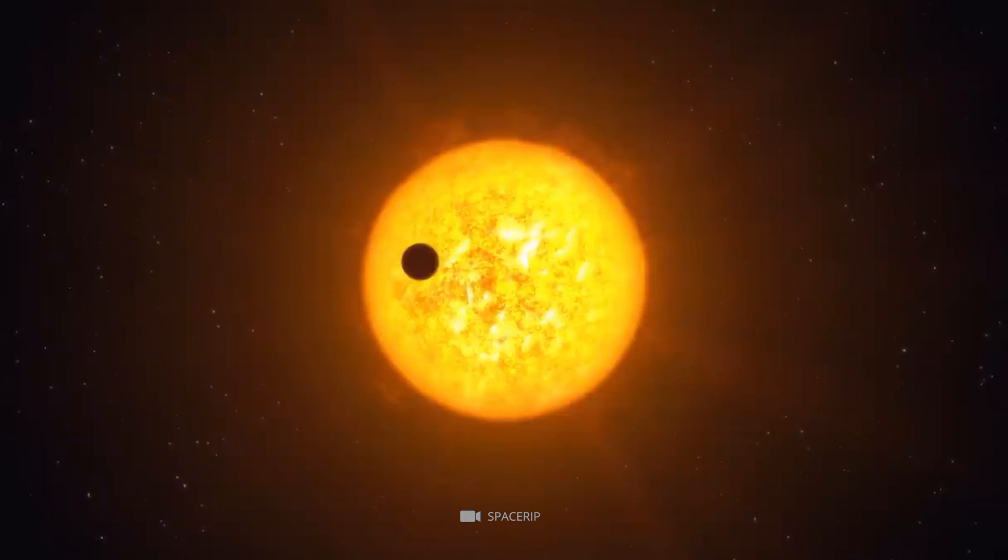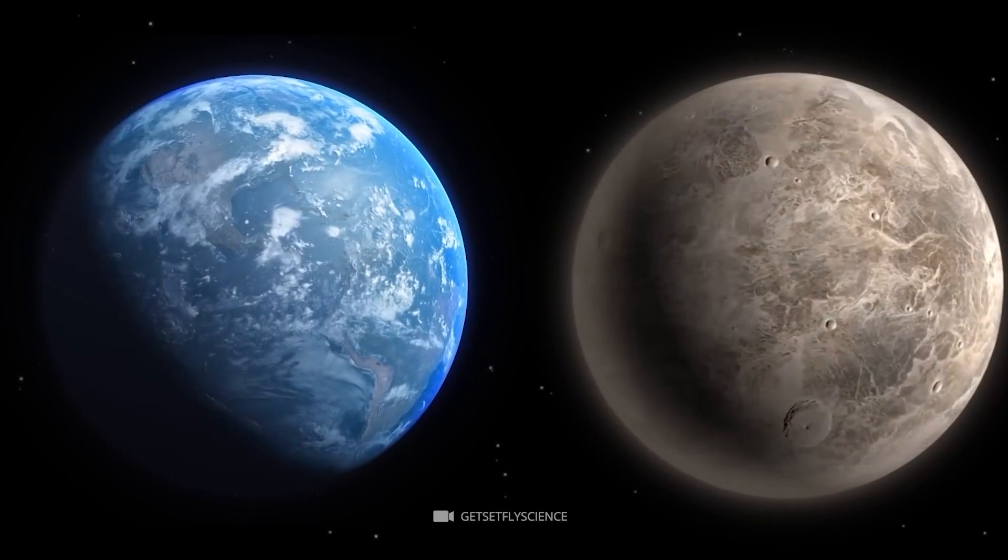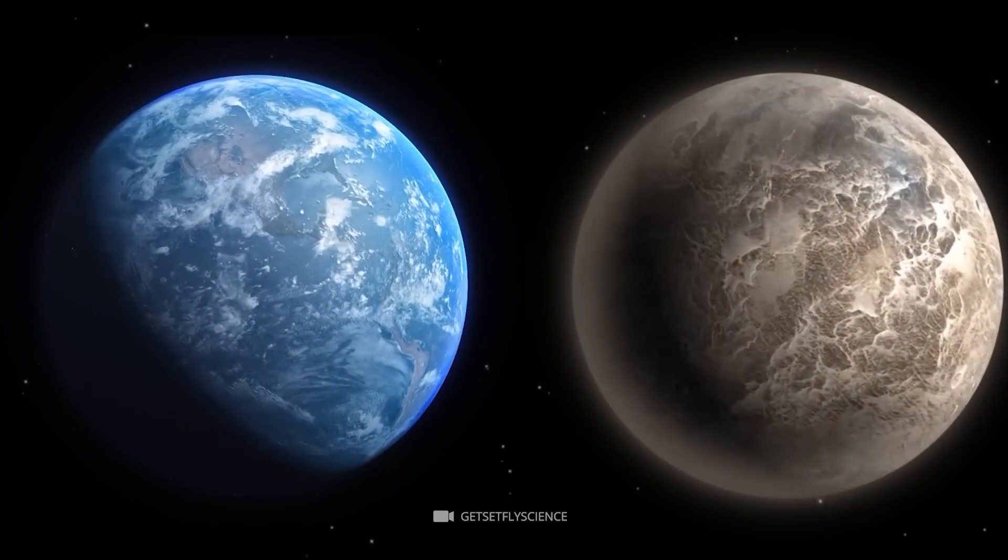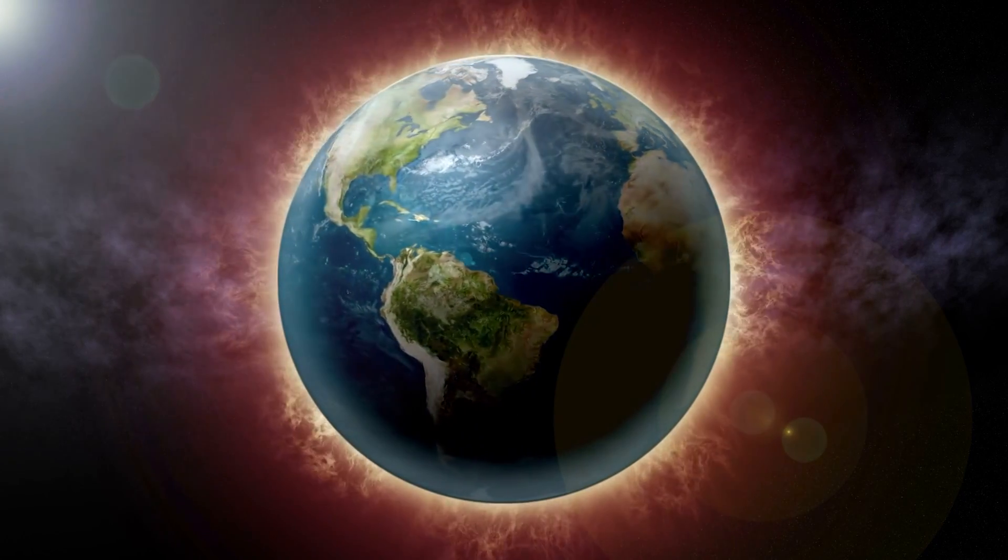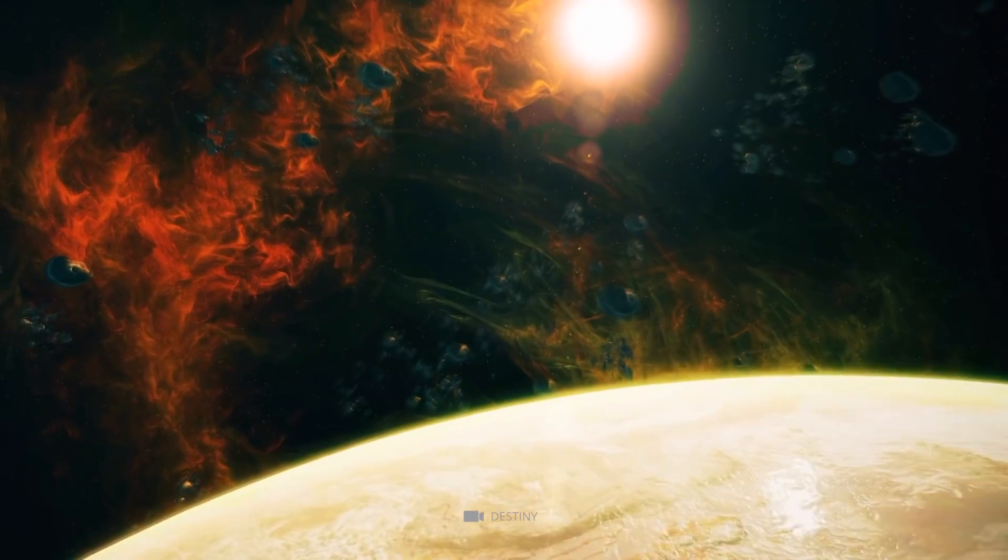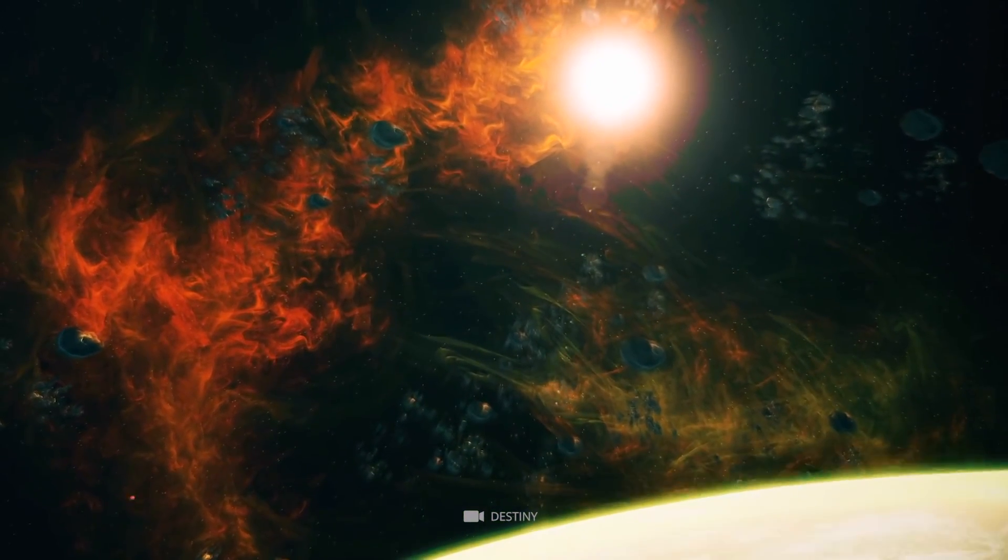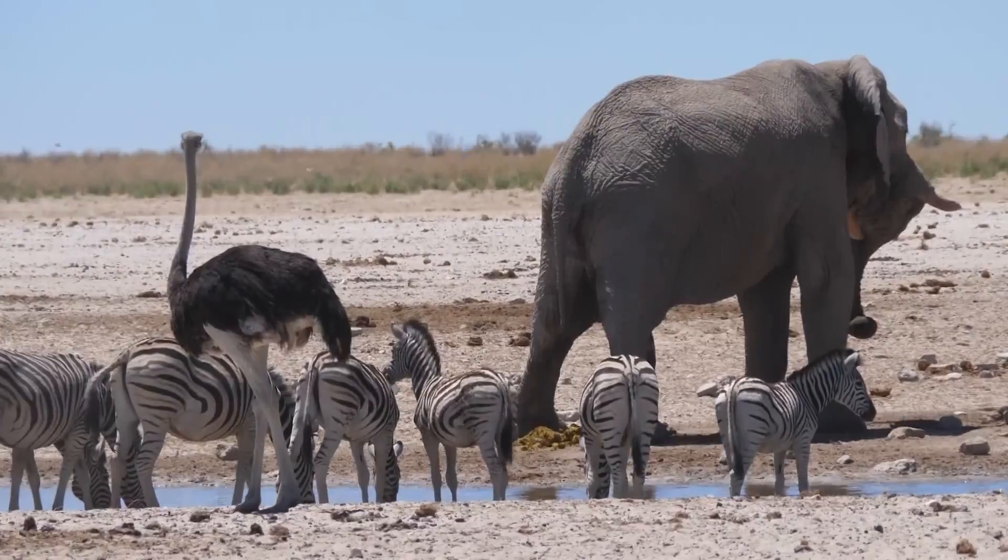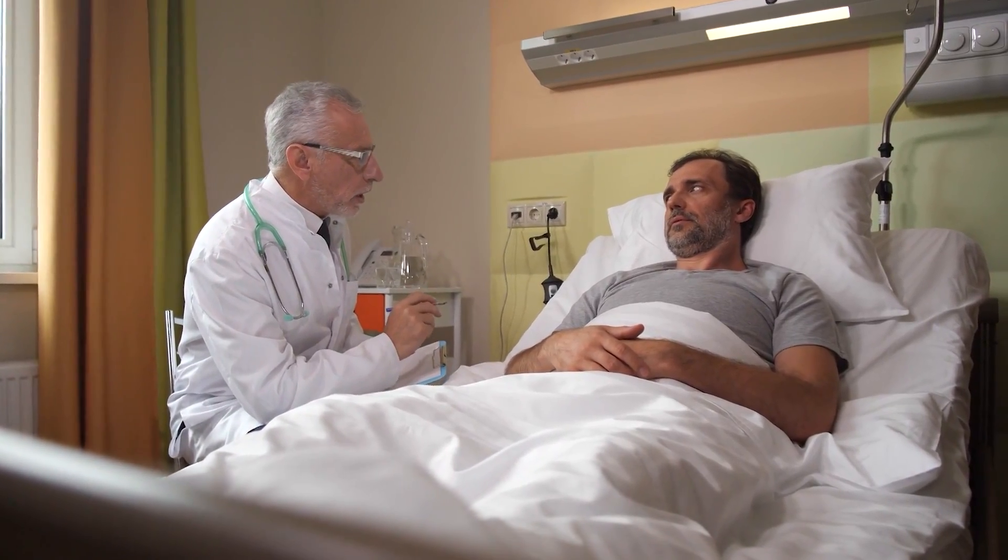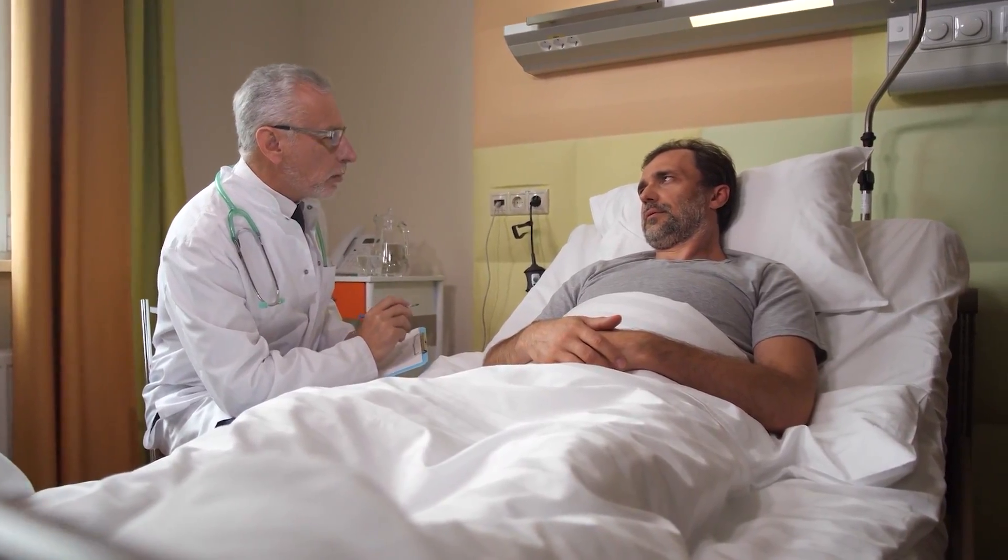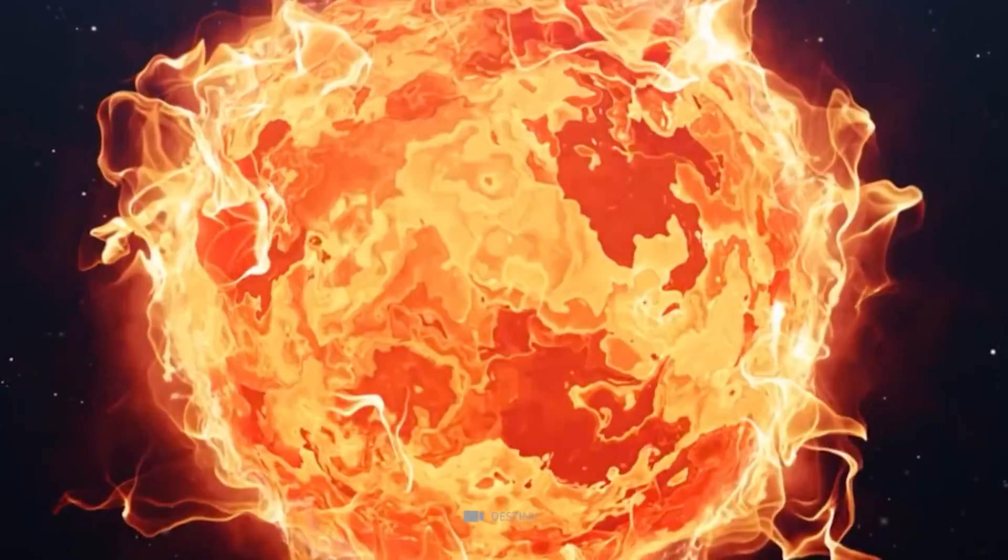In addition to that, studies have also suggested that there may be evidence for high levels of UV radiation near Kepler-39b due to its proximity to its parent star, which could potentially damage any life forms present on this world should they exist despite difficulty being able to survive in such high temperatures.